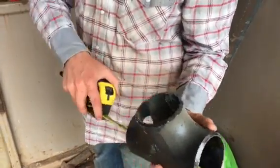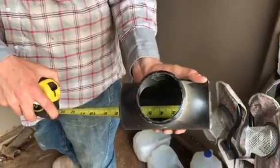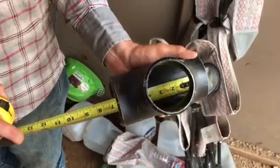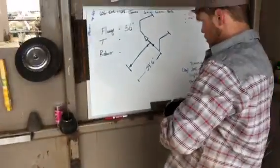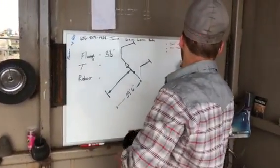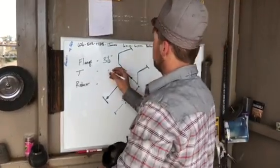All right, run your tape through it. We're 6 and 3/4, which half of that is what, Dad? Three and three-eighths. Three and three-eighths.